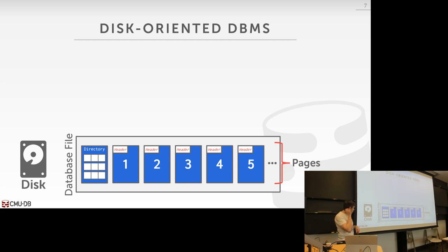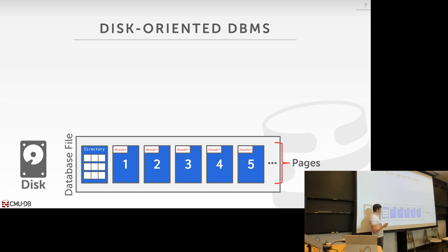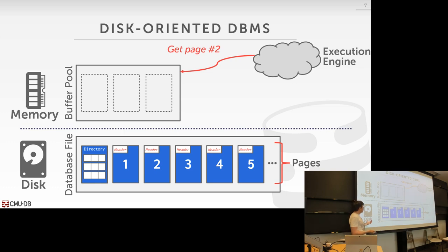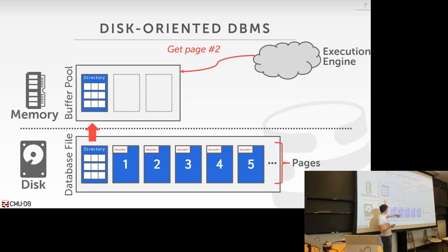This is the overall architecture of the lower storage manager. We've covered the database file, the page directory for finding data, and pages on disk. Now we're talking about the buffer pool. When the execution engine says 'I want to read page two,' we need to fetch the page directory into memory, find the page we want, and fetch it into memory. The tricky part is if we don't have enough free memory to bring in the page we need, we have to decide which page to write out.